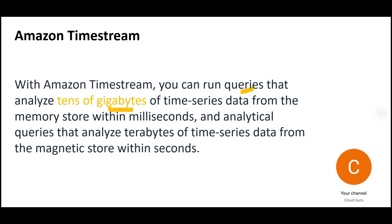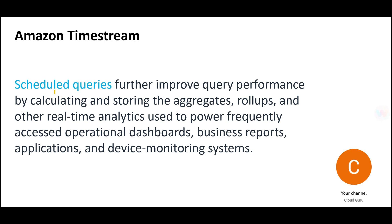Using Timestream you can run queries on tens of gigabytes of data and get responses in milliseconds from the memory store. From the historical magnetic store, you can analyze terabytes of time-series data. In memory you can store less but access it faster; in the magnetic store you can store more — up to terabyte scale.